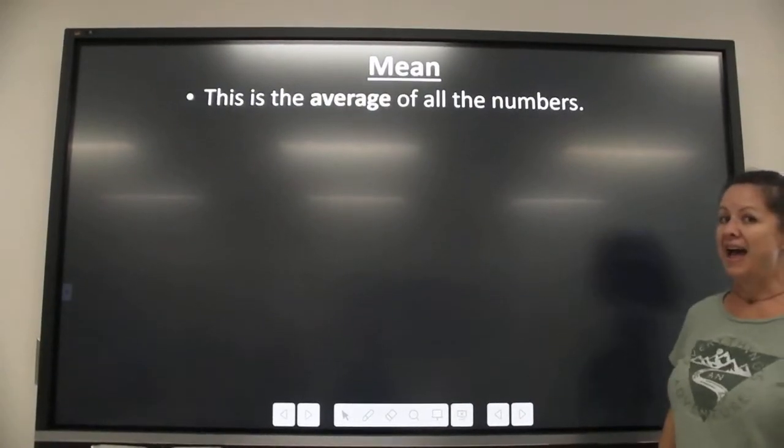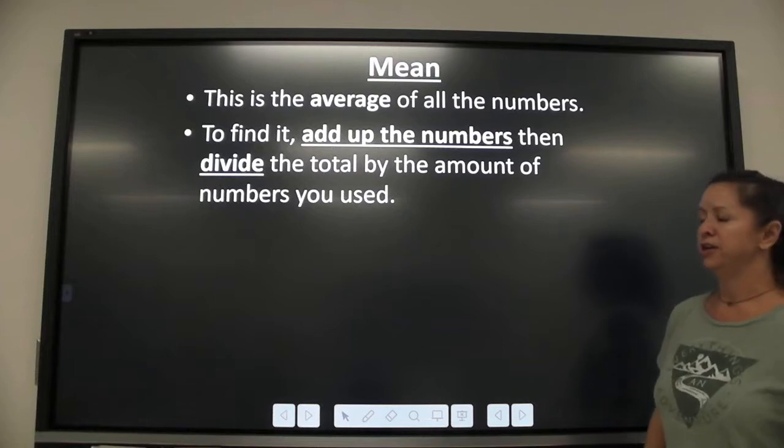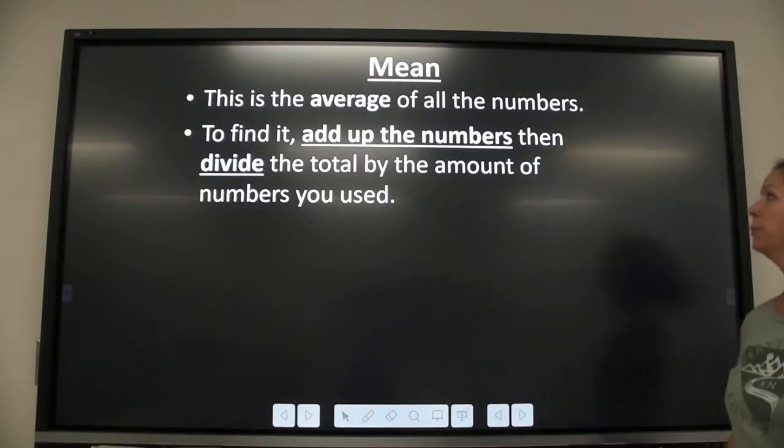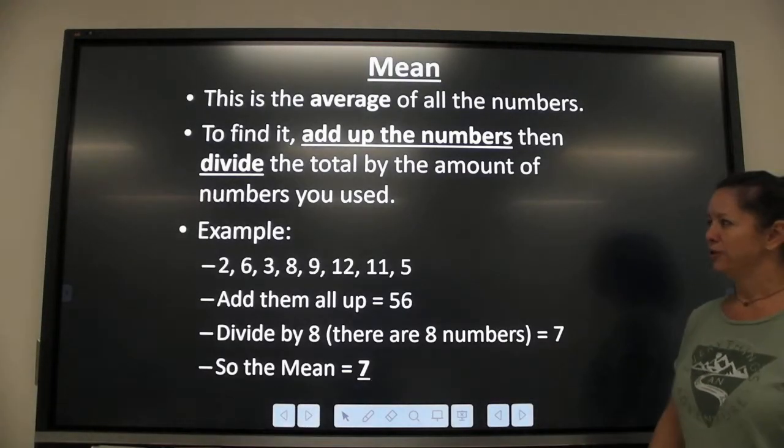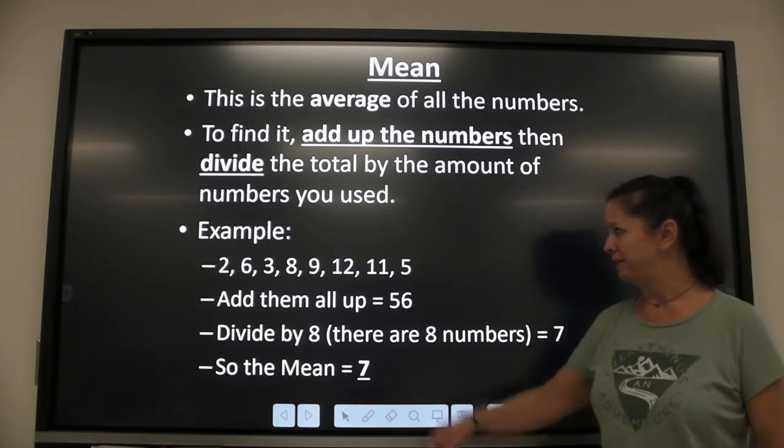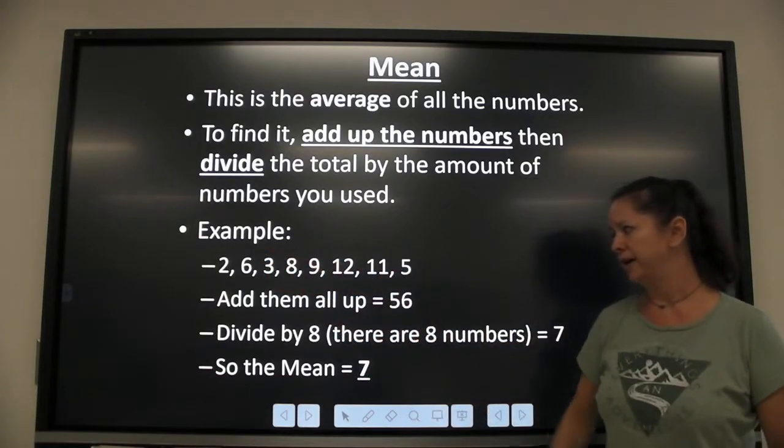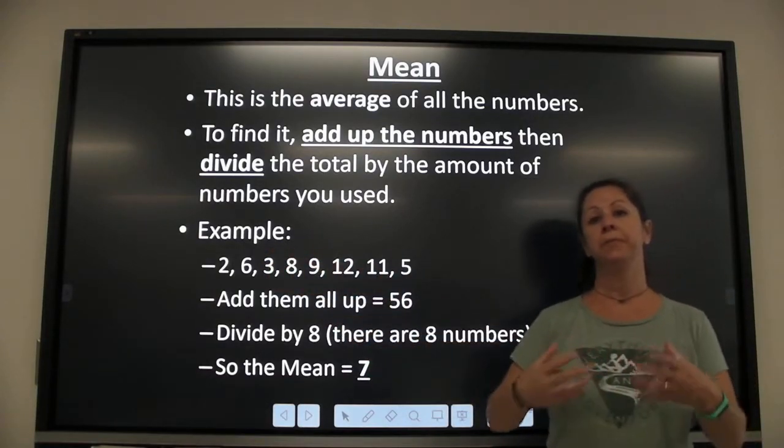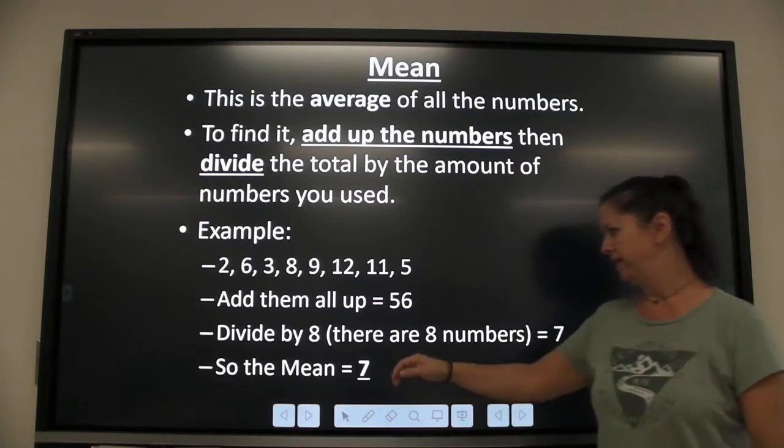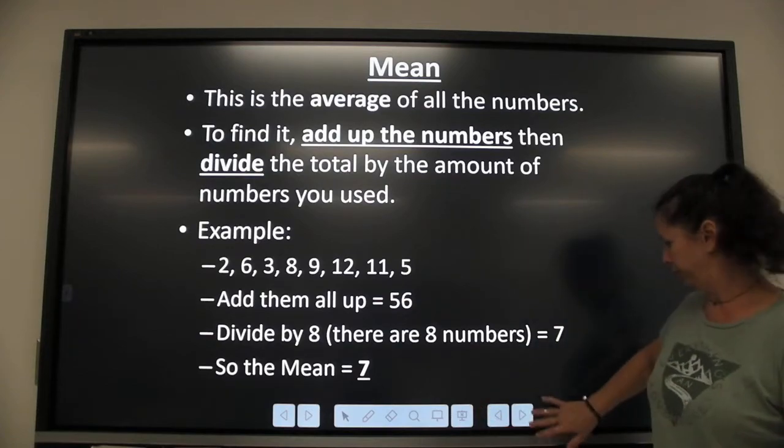So mean, remember that's an average. You add up all the numbers and divide by the total number of numbers. So for example, if your numbers were 2, 6, 3, 8, 9, 12, 11, and 5, when you add those all up, you got 56. There's 8 of them up there. So divide by 8, your mean, your average is 7. So remember that the mean is the average of the numbers.